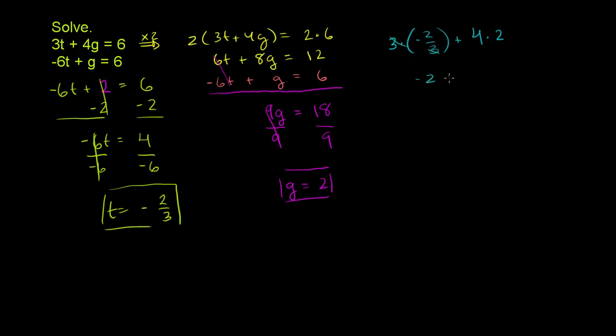Plus 4 times 2 is 8. Negative 2 plus 8 is equal to 6. And that's exactly what that first equation got us. So these two values definitely satisfy both equations.